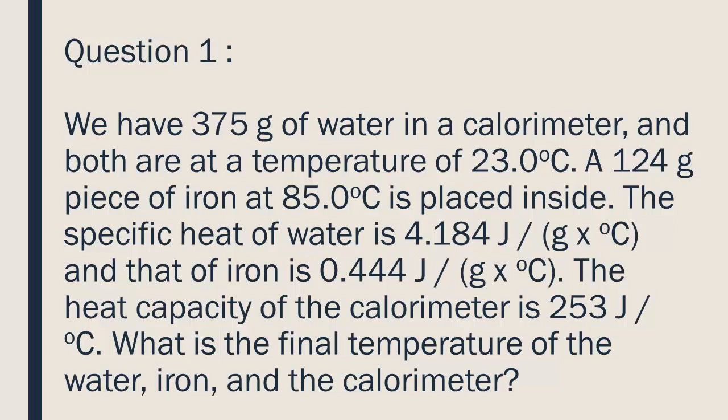We have 375 grams of water in a calorimeter and both are at a temperature of 23.0 degrees Celsius. A 124 gram piece of iron at 85.0 degrees Celsius is placed inside. The specific heat of water is 4.184 joules per gram degrees Celsius and that of iron is 0.444 joules per gram degrees Celsius. The heat capacity of the calorimeter is 253 joules per degree Celsius.